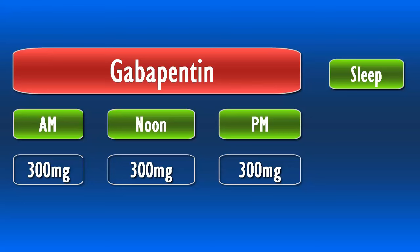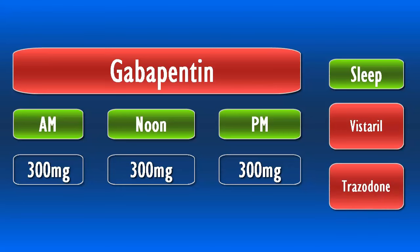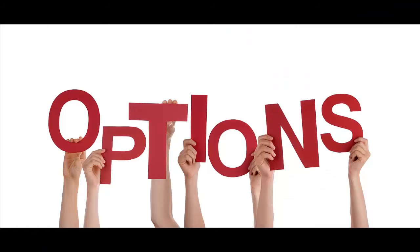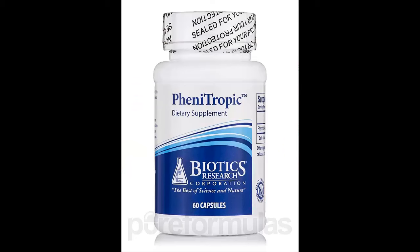Gabapentin has a very short half-life and needs to be taken throughout the day to support the withdrawal. Since it has such a short half-life, gabapentin is not effective at giving someone a full night's sleep. For sleep, a person may consider Vistaril, which is an antihistamine, or Trazodone, which is an older tricyclic antidepressant. These meds are just for softening the withdrawal and are lifted once the withdrawal is complete. A non-prescription activated GABA product that is effectually similar to gabapentin is called phenotropic, also called phenibute, and is used in a similar way.